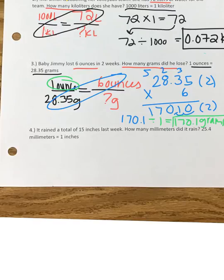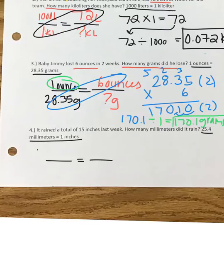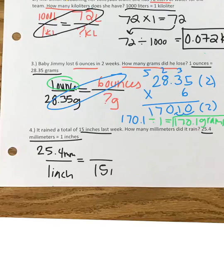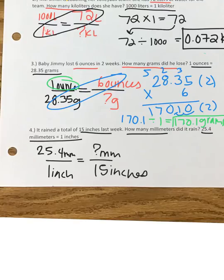The last problem says it rained a total of 15 inches last week — how many millimeters did it rain? The conversion given is 25.4 millimeters equals one inch. Set up the proportion with the conversion first: 25.4 millimeters is one inch. Then go back to the problem — they gave us 15 inches, which goes on the bottom. Our unknown is millimeters. Multiply your diagonals and divide by what's left.